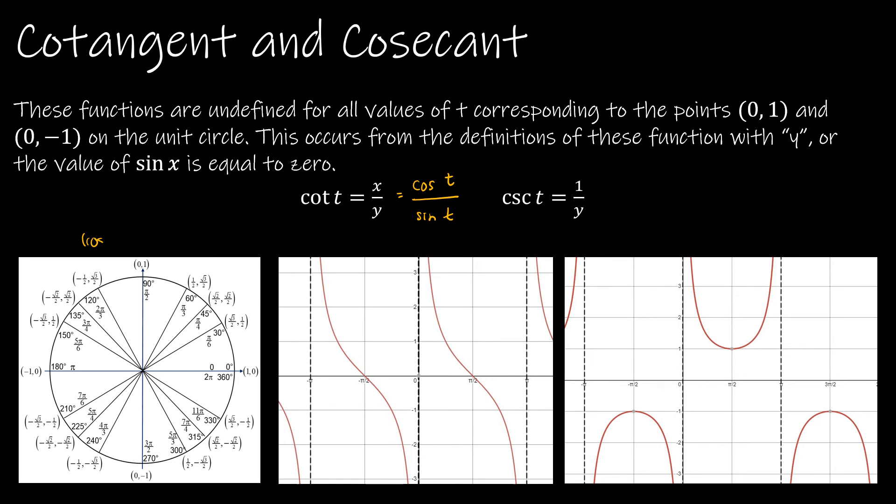Again, this is cosine, comma, sine. And so I'm looking for where is sine equal to 0, or where is the y value equal to 0. So now I'm looking at multiples of pi. So pi, 2 pi, 3 pi, and so on. Positive and negative multiples of pi. And again, both related to the y in the denominator.